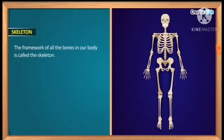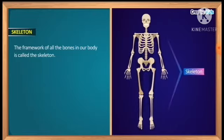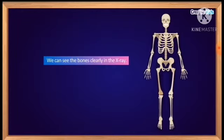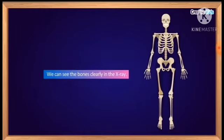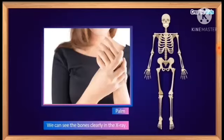Now about the skeletal system. Skeleton means our body has 206 bones present. These bones are not separate — they are joined together. All these bones join together to form a complete framework, which is called the skeleton. To know the shape and size of bones, we can sometimes find out by touching, and sometimes by taking an X-ray.